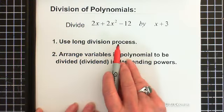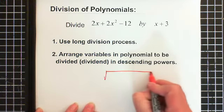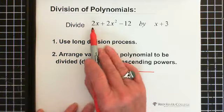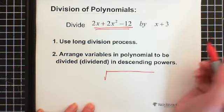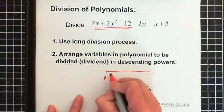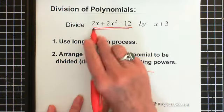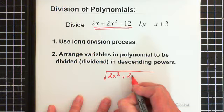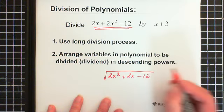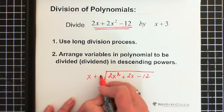We use the long division process, which looks like this. We arrange the variables in the polynomial to be divided — called the dividend — in descending powers. So the term with the highest power goes first: 2x squared. Second highest power goes next, that's plus 2x. And minus 12, the constant, always goes last. And we're dividing by x plus 3, so that goes here.